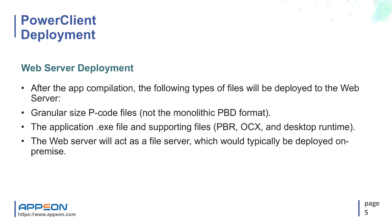After the app compilation, the following types of files will be deployed to the web server: P-code files that are granular in size, not the monolithic PBD format; the application .exe file and supporting files such as resource files, OCX files, and desktop runtime files, for example PBBM. Such files are the same as in client-server PowerBuilder applications. There will be dedicated configuration settings for developers to specify the supporting files that will be packaged and deployed with the application to the desktop.